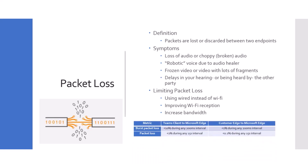Now looking at the metrics and targets for Teams. The first metric: packet loss from Teams client to Microsoft edge — less than 10% during any 200 millisecond interval. From the customer's edge to Microsoft edge — less than 1% during any 200 millisecond interval. For packet loss from the Teams client to Microsoft edge, it's less than 1% during any 15 second interval, and from the customer edge to Microsoft edge it's less than 0.1% during any 15 second interval.